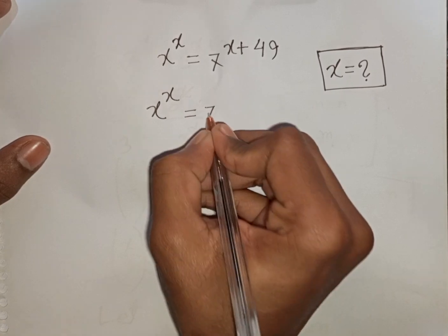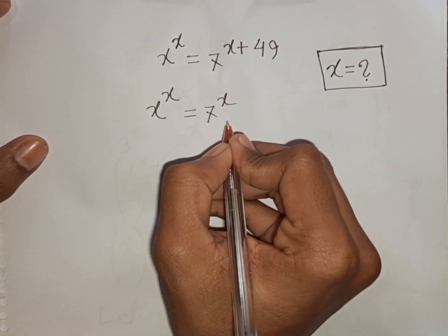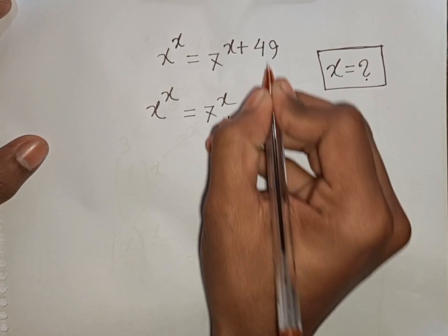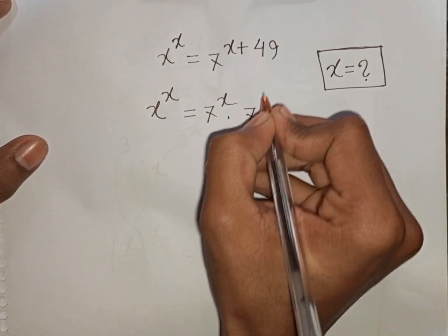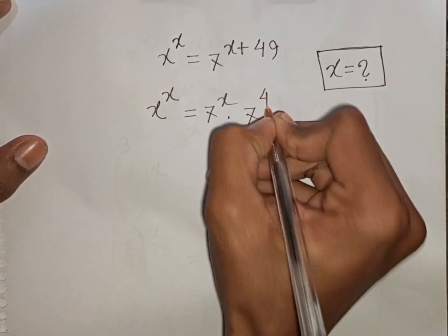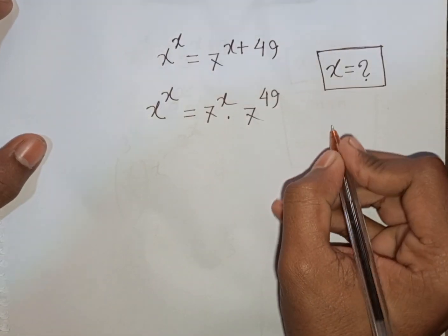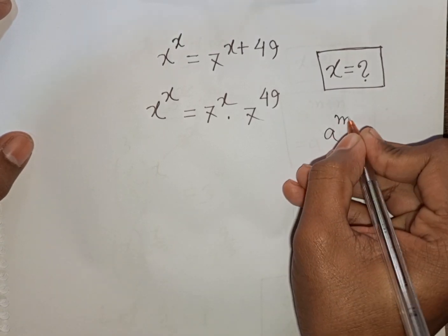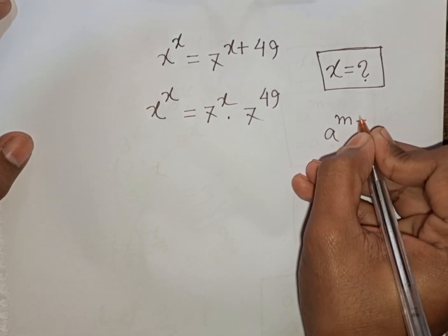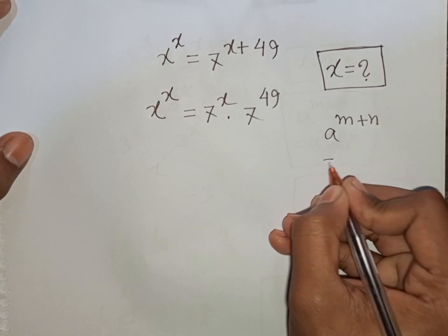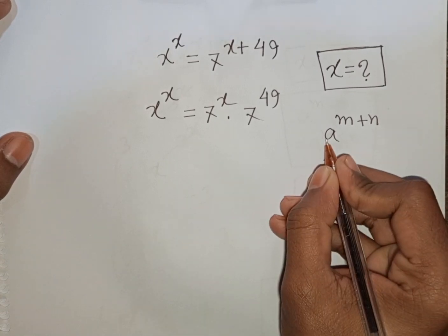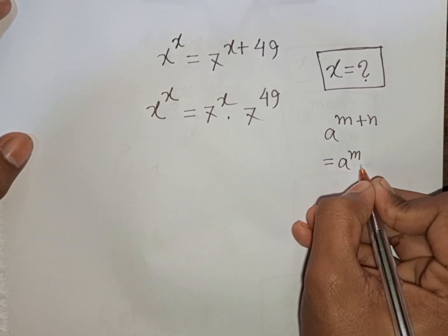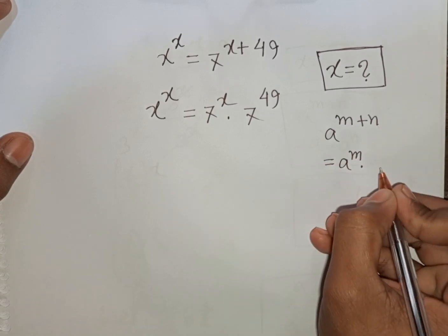That means it will be 7^x times 7^49, according to the exponential rule that a^(m+n) = a^m times a^n.